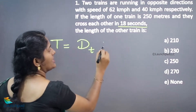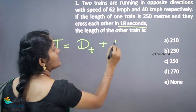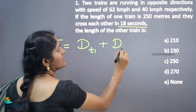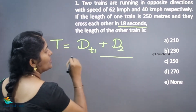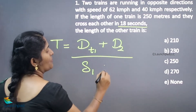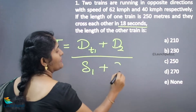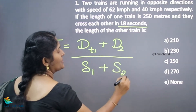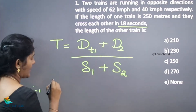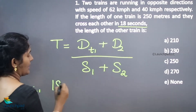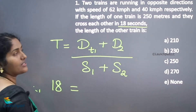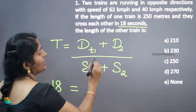Time taken to cross each other equals distance of train 1 plus distance of train 2, divided by speed of train 1 plus speed of train 2. So the time taken is 18 seconds.